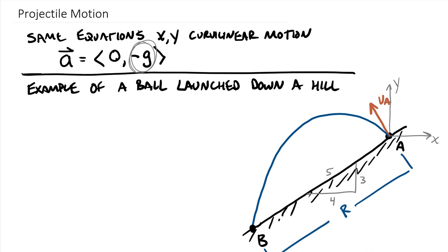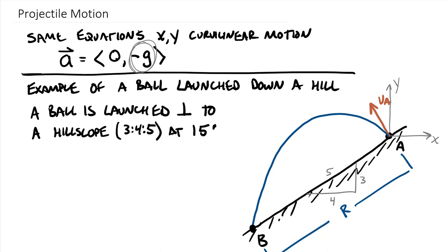So the problem tells us that we have a ball is launched perpendicular to a hill slope. And this hill slope is defined by that 3, 4, 5 right triangle at 15. So this is the velocity, initial velocity of the ball, 15 meters per second. And we want to find R. So find the distance down the slope where this ball goes.